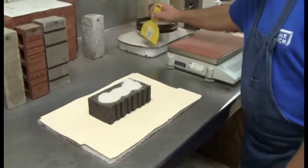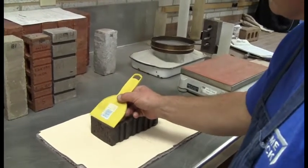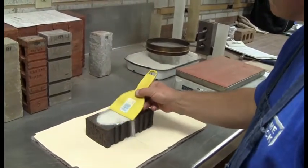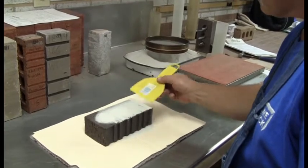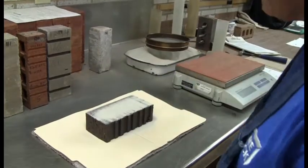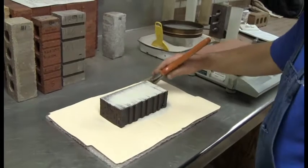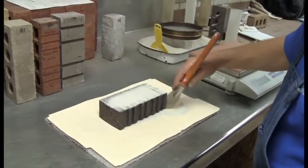And keep in mind, when he's doing this, we've already measured the length, width, and height, or the length, width, and depth of this brick. So he already has those measurements. So basically, the sand is to give you the measurement to calculate the void. And the formula for the void is in the procedure.